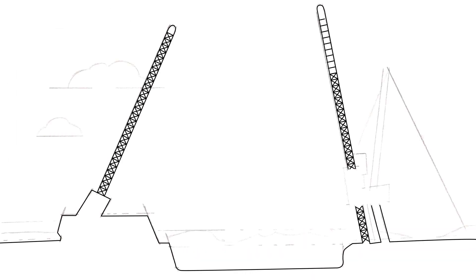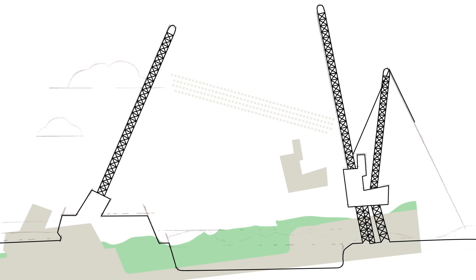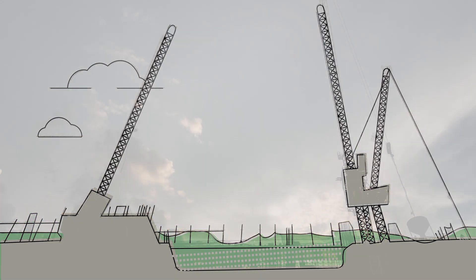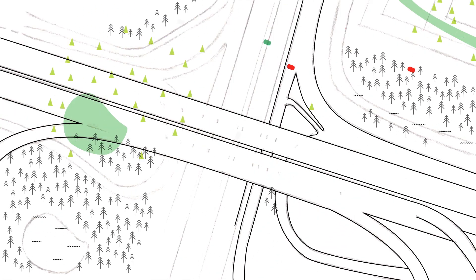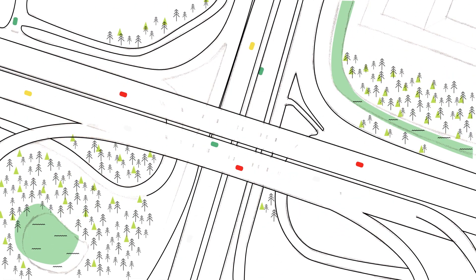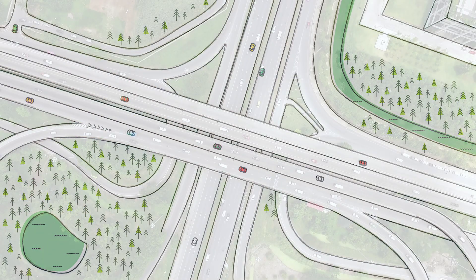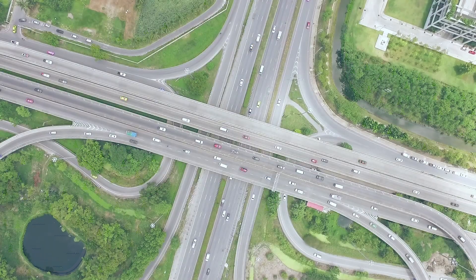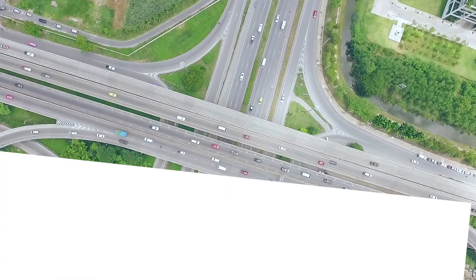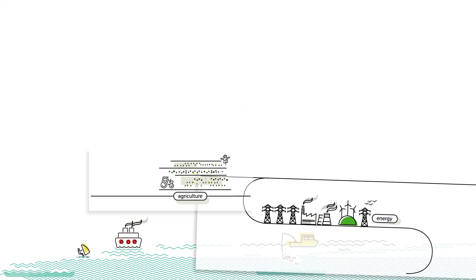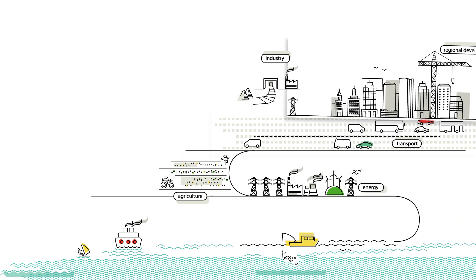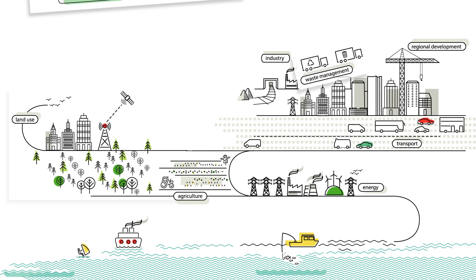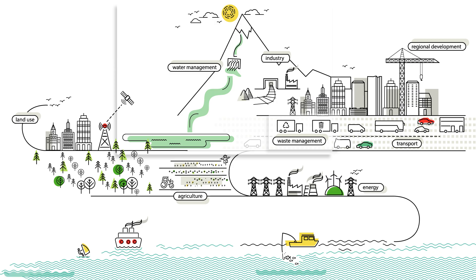Governments shape the future of communities by defining development strategies for nations and regions. These governmental plans and programs, policies and legislation will establish the basis for future decisions on projects in such diverse fields as agriculture, energy, industry, transport, regional development, land use, waste management or water management.